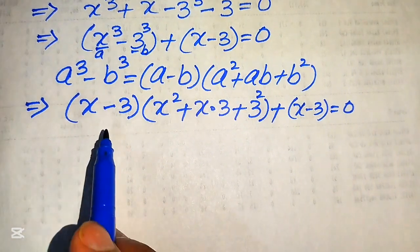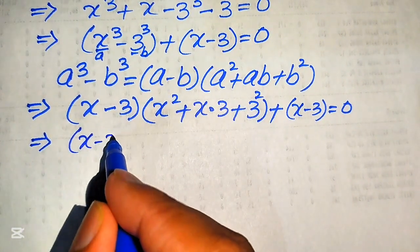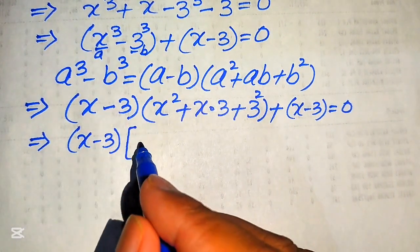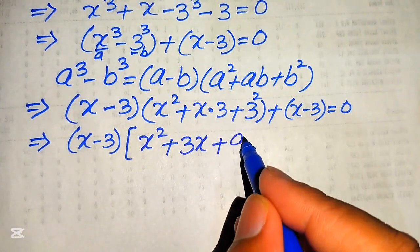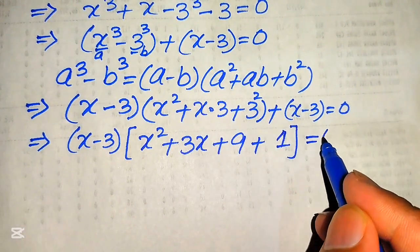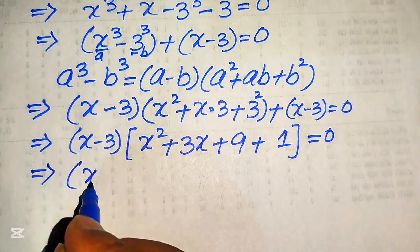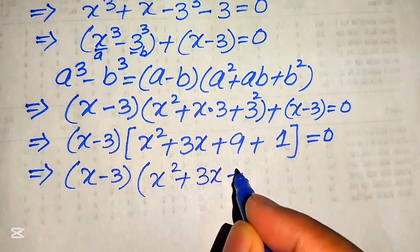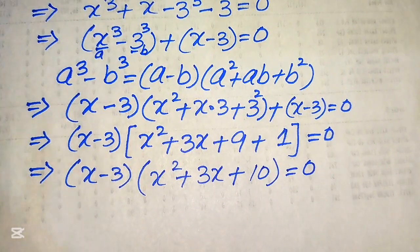You see that (x minus 3) is a common factor in both terms, so we factor it out. Taking (x minus 3) common, we get x squared plus 3x plus 9 from the first term, plus 1 from the second term. After simplification this becomes (x minus 3)(x squared plus 3x plus 10) equals 0.